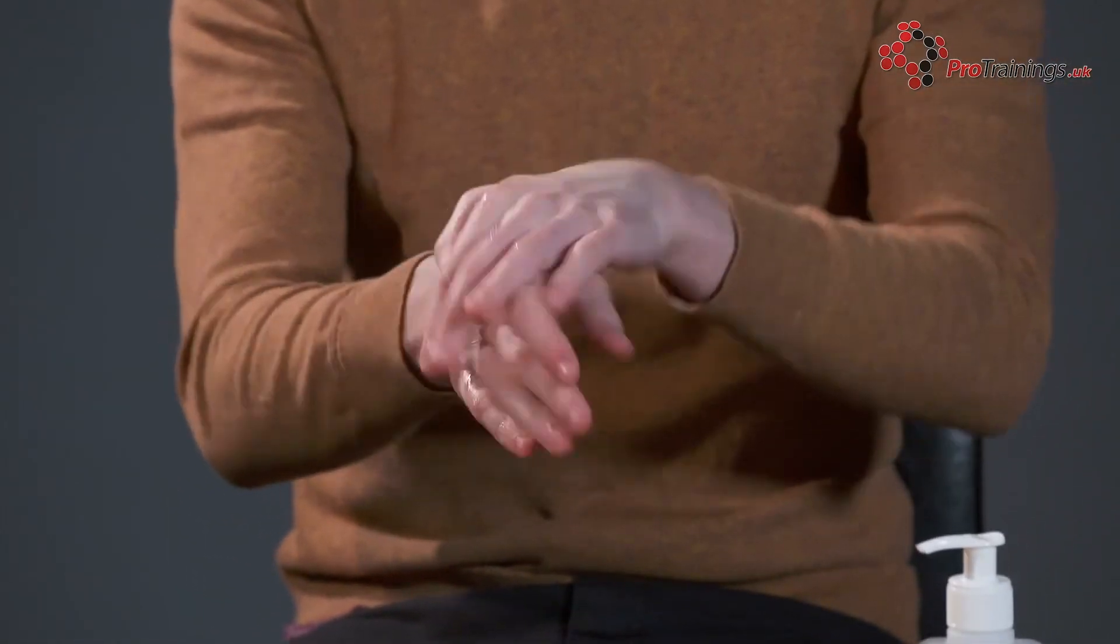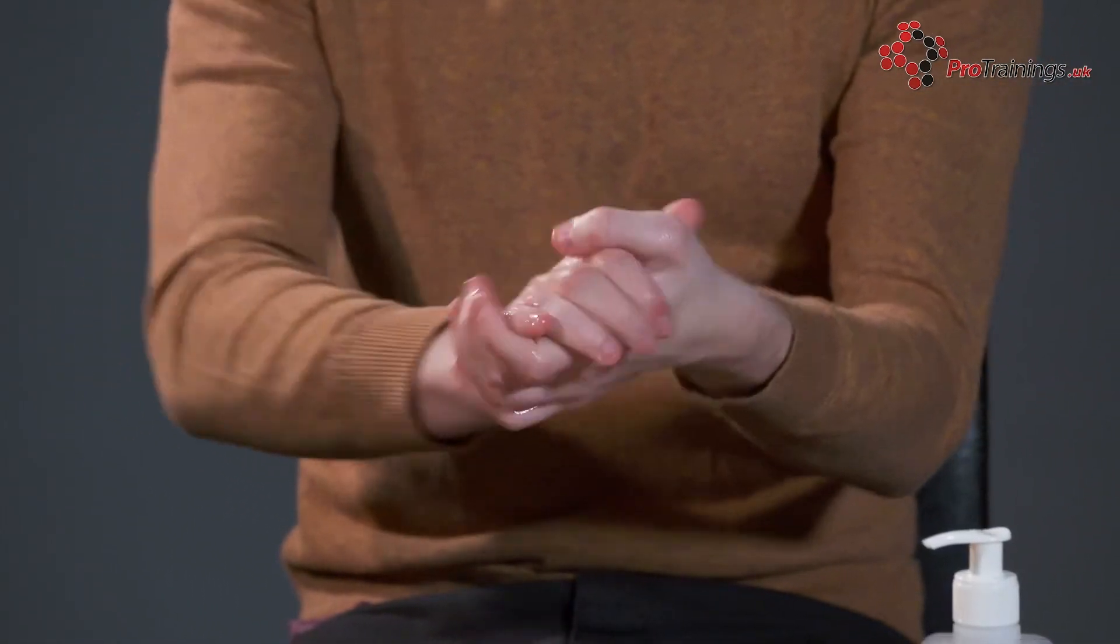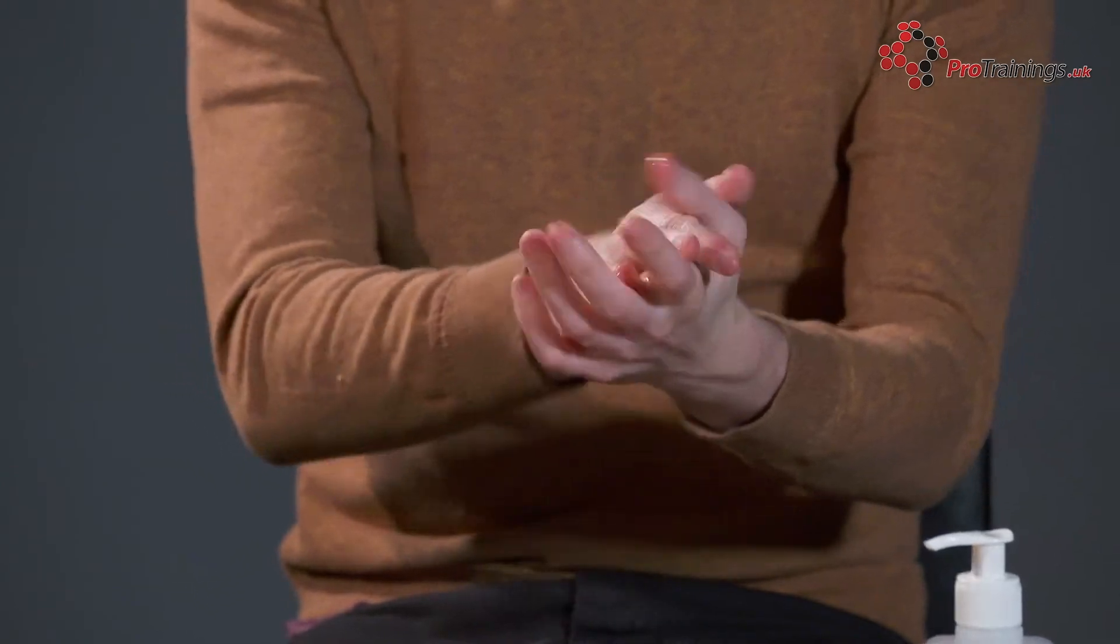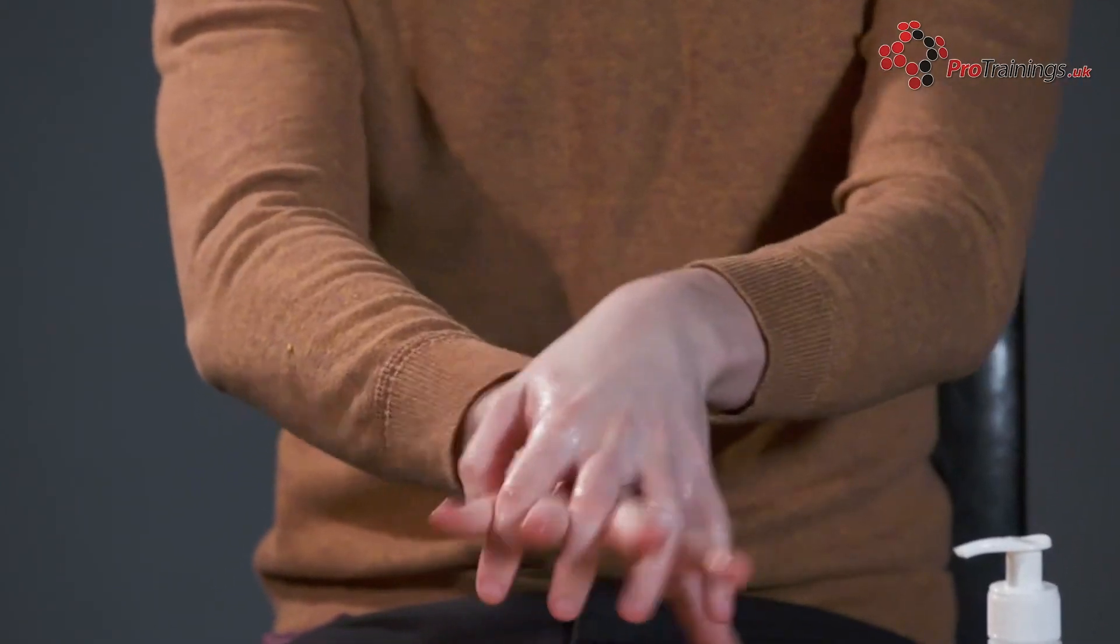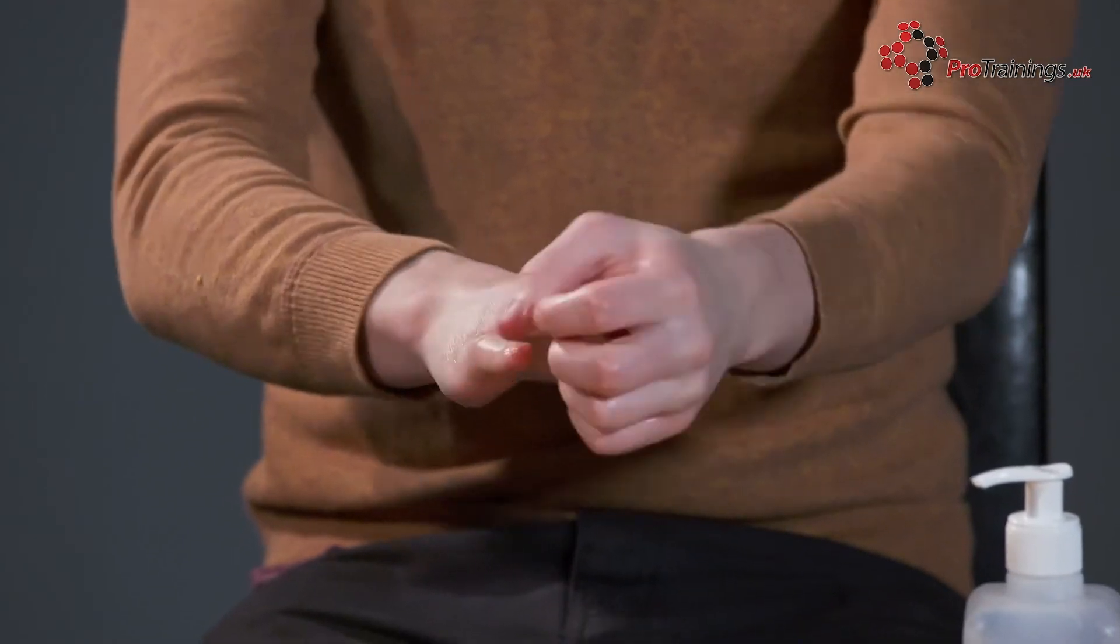Then rub your palms together in a circular motion before rubbing between your fingers. Then clean the knuckles and rub your thumbs in a rotating manner, making sure you clean between the thumb and the index finger.